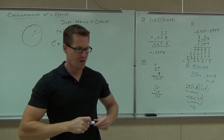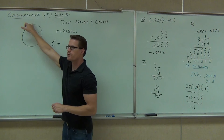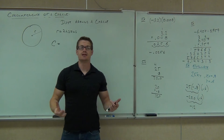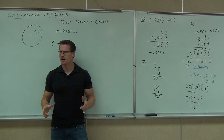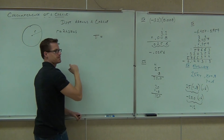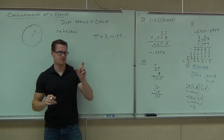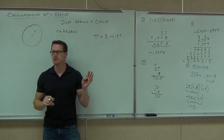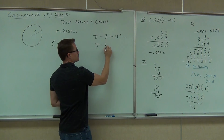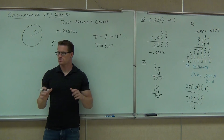A long time ago, mathematicians wanted to find the relationship between the radius and the circumference — the distance from the center to the edge versus how far around the circle you travel. And somebody figured it out. There's this very special number called pi. Pi is 3.14159 and it never, ever ends, and it never repeats a pattern — which means you cannot represent it as a fraction. We're going to use pi as approximately 3.14.